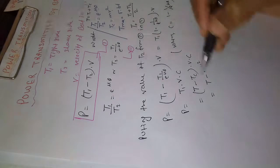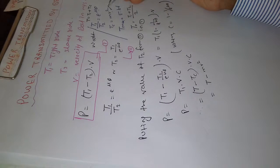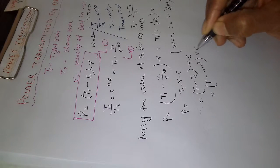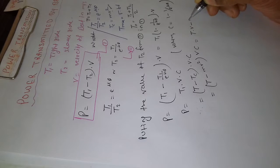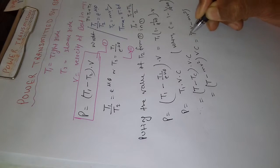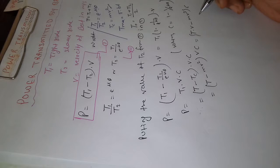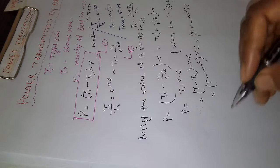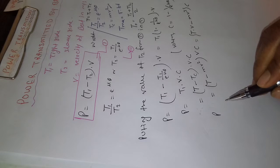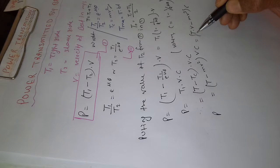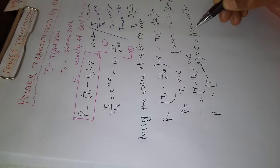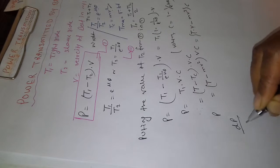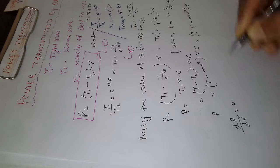Since Tc equals MV², we substitute and get P = (T − MV²) × V × C, which expands to (T×V − MV³) × C. The total tension T is constant, so the only variable is the velocity V. To find maximum power, we set dP/dV equal to zero.